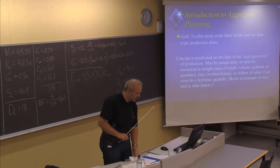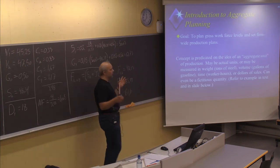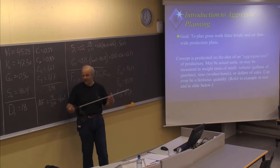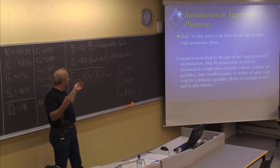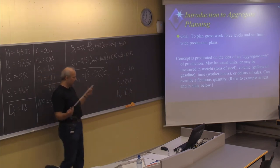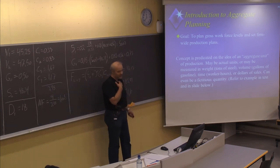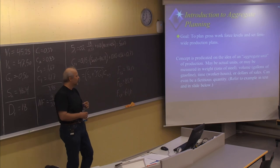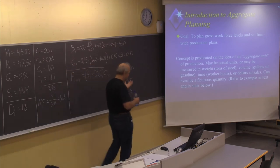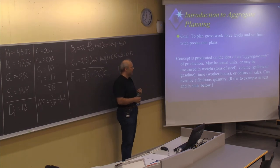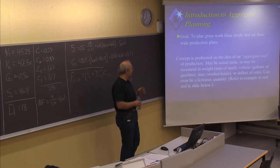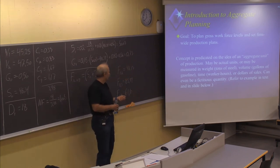This chapter is called aggregate planning. The goal is to plan gross workforce level and set production plans according to a given demand, which might be found using some of the forecasting methods learned in chapter 2. We assume we have a good forecasting method and a good plan for the coming periods — for example, the next six months. We use the forecasting method and set up production plans to meet the forecast demand. You should also include current orders if you have them, since you may know what is going to happen in the future.